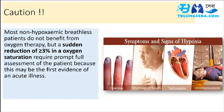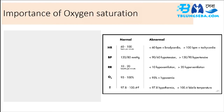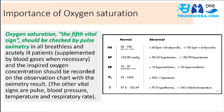Oxygen saturation — the fifth vital sign — should be checked by pulse oximetry in all breathless and acutely ill patients, supplemented by blood gases when necessary. The inspired oxygen concentration should be recorded on the observation chart with the oximetry result. The other vital signs are pulse, blood pressure, temperature, and respiratory rate.